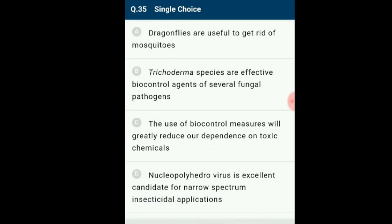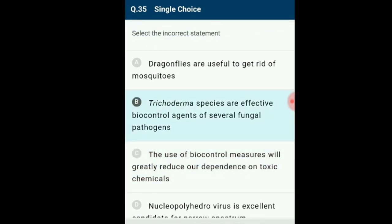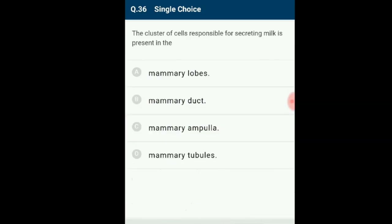Question number 35: Select the incorrect statement. The incorrect statement is that biological control developed for treatment of plant diseases uses the fungus Trichoderma. Trichoderma species are free-living fungi very common in root ecosystems and are effective biocontrol agents of several fungal pathogens. The incorrect statement is option B.